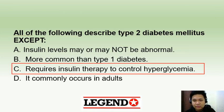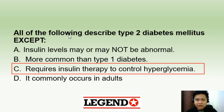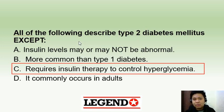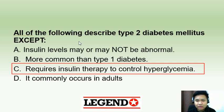All of the following describe type 2 diabetes mellitus except letter C: requires insulin therapy to control hyperglycemia. Remember that type 2 diabetes mellitus is more of a problem in the insulin receptors — there is insulin resistance because of defective receptors. The pancreas compensates by producing more insulin, so type 2 patients do not need insulin to control hyperglycemia. It is the type 1 patients who have absolute insulin deficiency due to autoimmune destruction of beta cells, who require insulin.